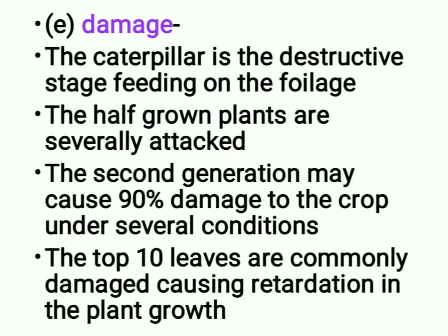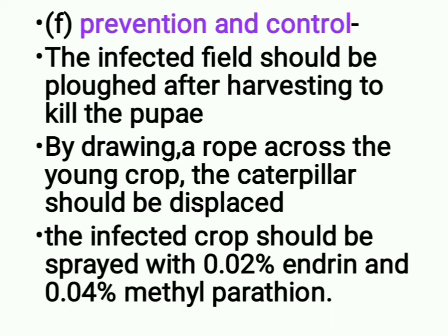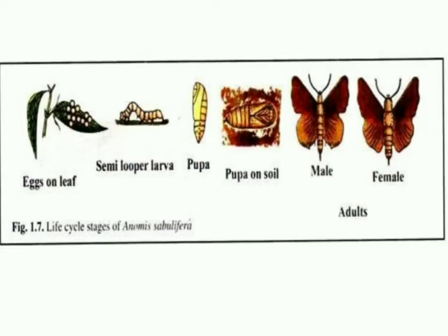Damage: the caterpillar is the destructive stage, feeding on the foliage. The half-grown plants are severely attacked; the second generation may cause 90 percent damage to the crop. The top 10 leaves are commonly damaged, causing retardation in plant growth. Prevention and control: the infected field should be plowed after harvesting to kill the pupae. By drawing a rope across the young crop, caterpillars should be displaced. The infected crop should be sprayed with 0.02% endrin and 0.04% methyl parathion.